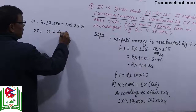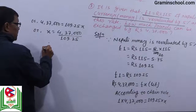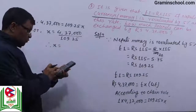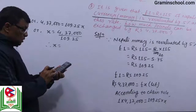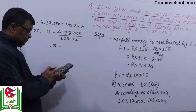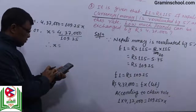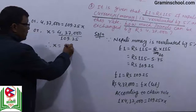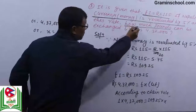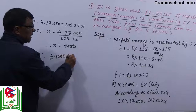x is equal to 4,37,000 divided by 109.25. x is equal to 4,000. So 4,000 pounds can be exchanged by rupees 4,37,000.